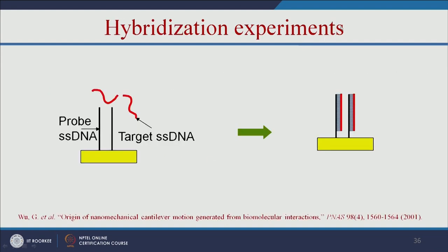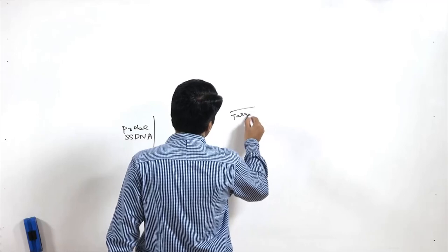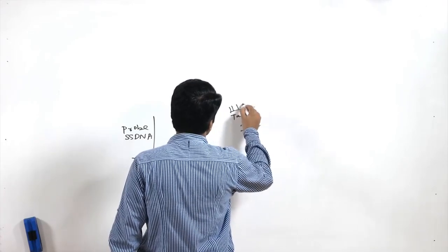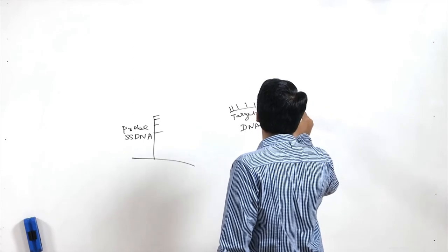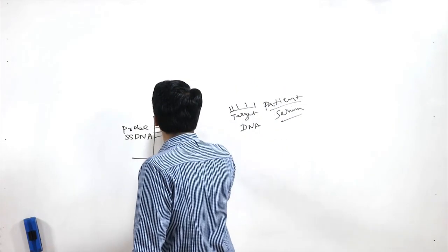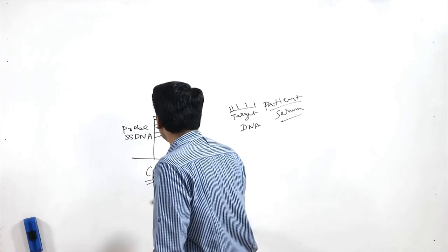Let us see how hybridization experiments can be used to make CNT-based sensors. Single-stranded DNA is added to the carbon nanotubes, and target single-stranded DNA is taken from patient serum. When added to this sensor, the two strands combine by hybridization. If the patient DNA forms a bond with the probe DNA, that means the person has the particular disease. When hybridization occurs, the electrical conductivity property of the CNT changes, and based on that we can detect the disease.